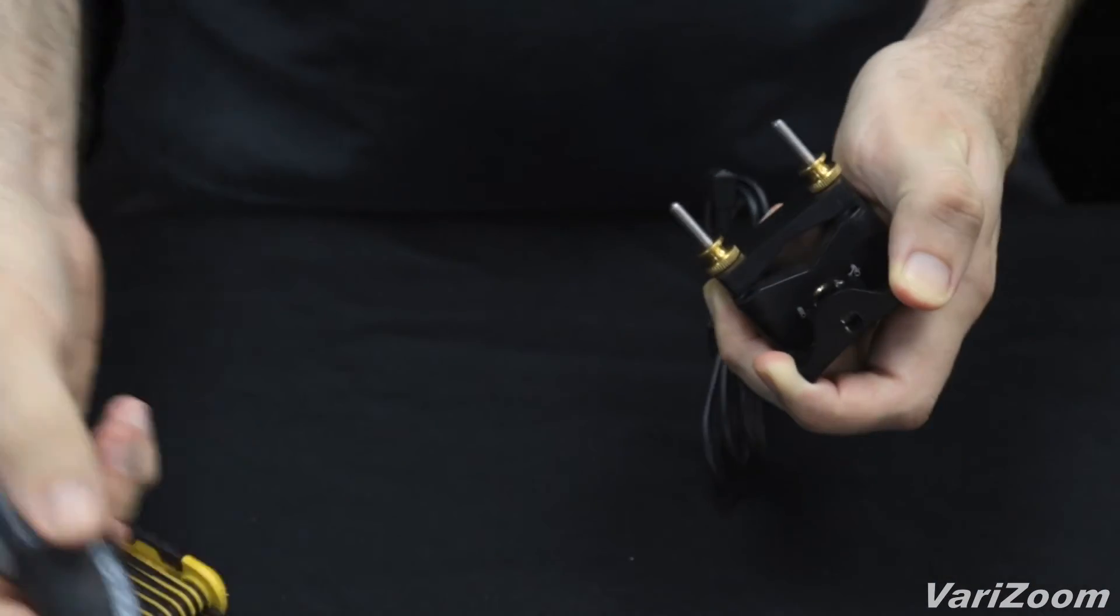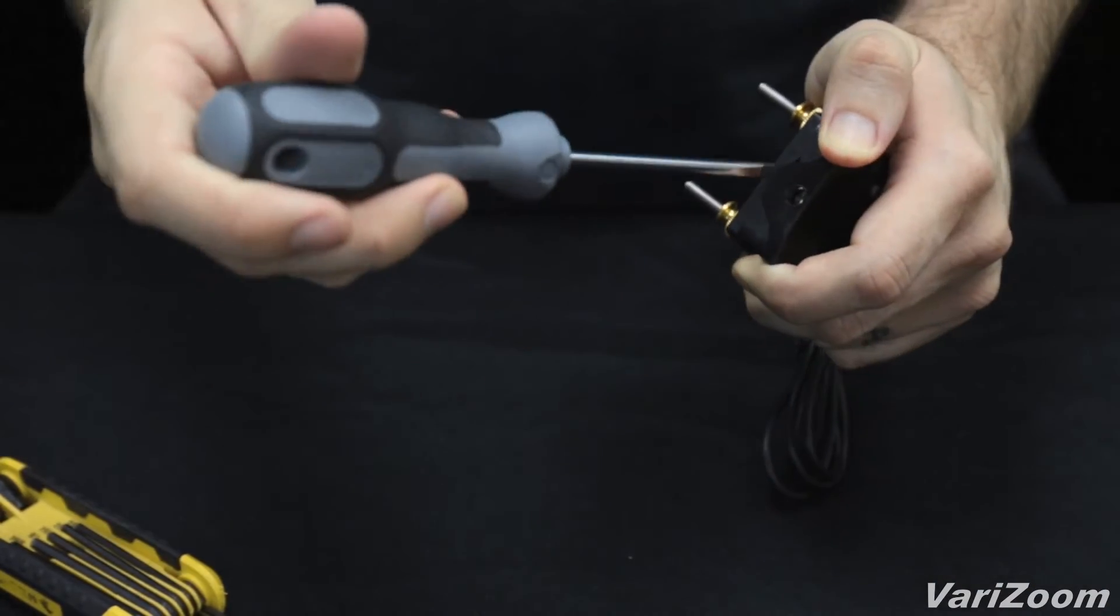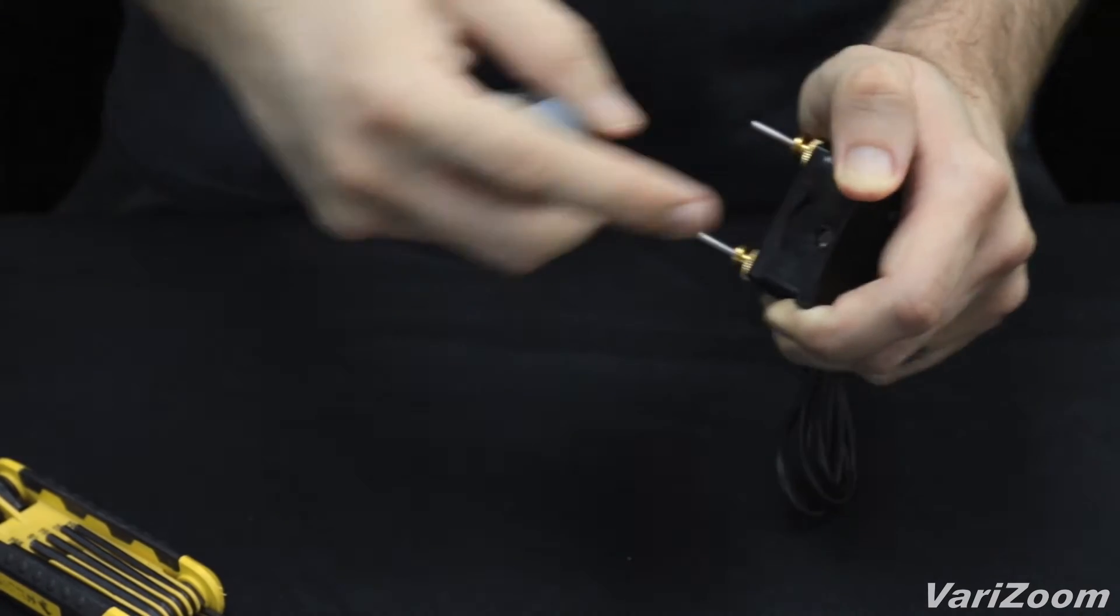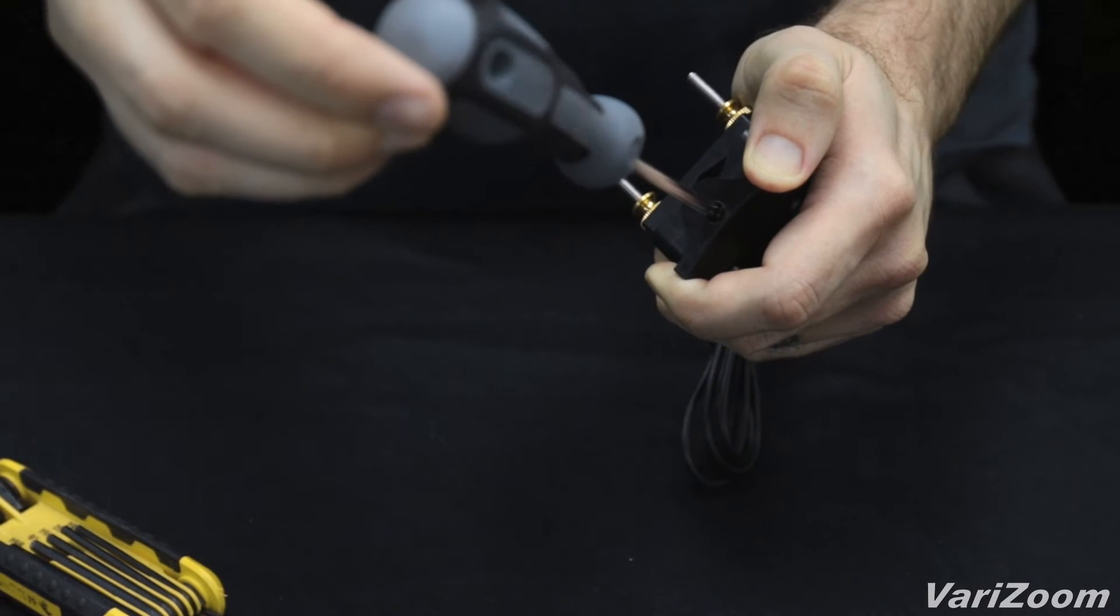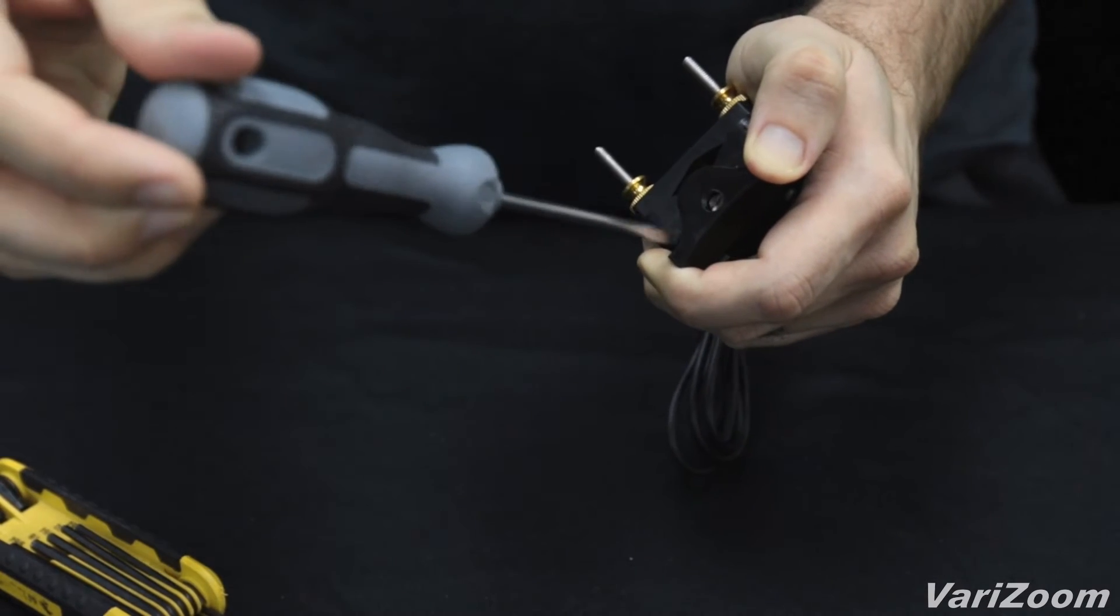Now, you take your flathead screwdriver. You need a smaller one. You can stick it through this hole here to the groove that's inside and basically turn to reposition the potentiometer in relation to the rocker.